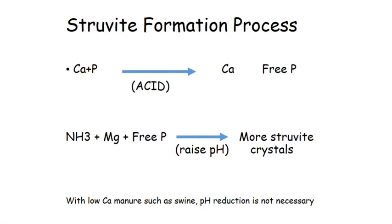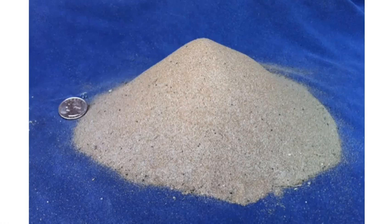With dairy manure we've got calcium-bound phosphorus. What we want to do is add acid to free up the phosphorus from that calcium, and then as it's going through the column we add ammonia. With the ammonia from the manure, plus the magnesium we've already added, plus phosphorus, when you raise the pH and run it through this fluidized bed you actually produce struvite. With swine manure, the original developer of this process realized the pH reduction in the first step wasn't really necessary.